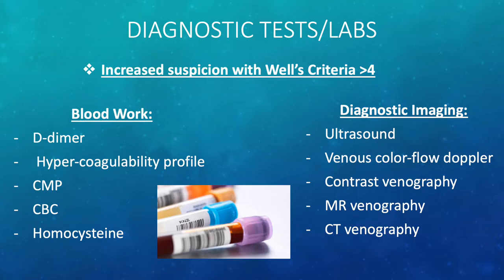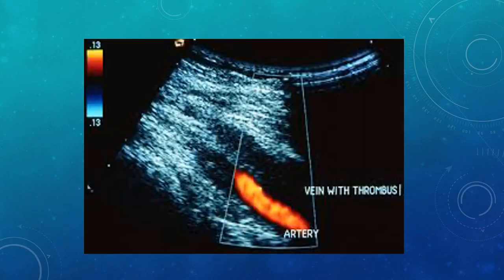Diagnostic tests done for suspicion of DVT include blood work such as D-dimers, hypercoagulability profiles, CMP, CBC, and homocysteine. Diagnostic imaging often includes ultrasounds, venous colored flow Doppler, contrast venography, MR venography, and CT venography. A pictured ultrasound shows the vein containing a thrombus next to the adjacent artery.